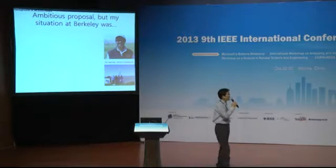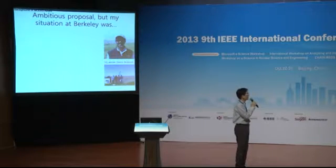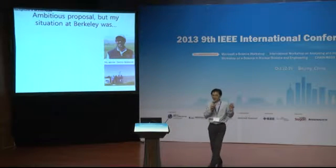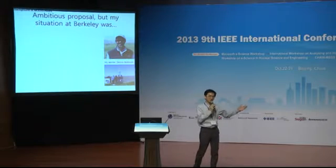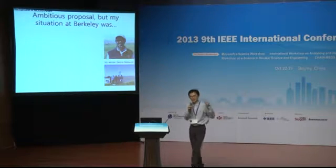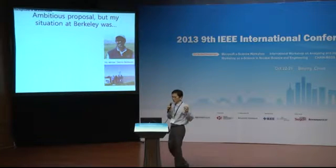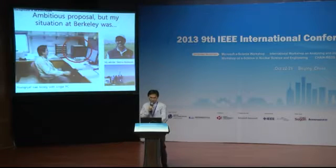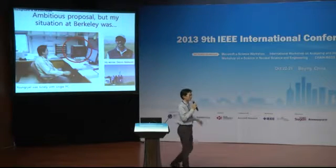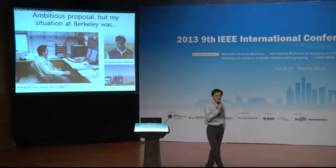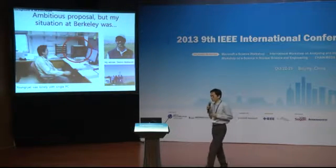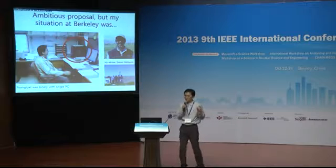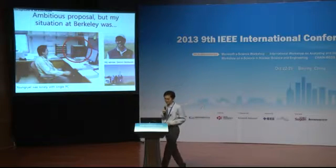My thesis advisor, Dennis Baldocchi, is a very respectable and fantastic field scientist. He had enough funding, but the money went for field instruments, maintaining sites, and purchasing new sensors. In the office, I had just one PC — that was the only resource I could use. How could I use just a single PC for a global remote sensing study?